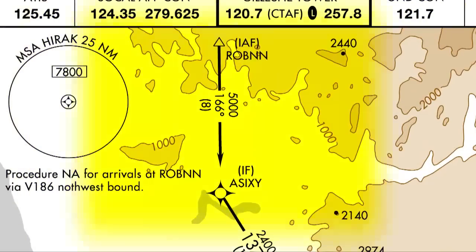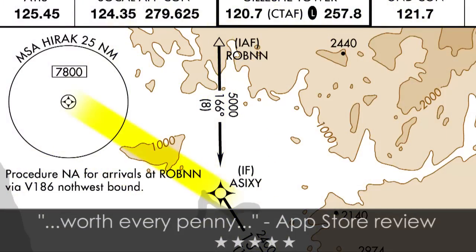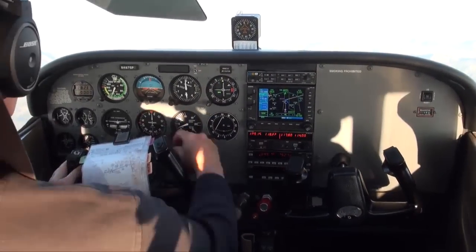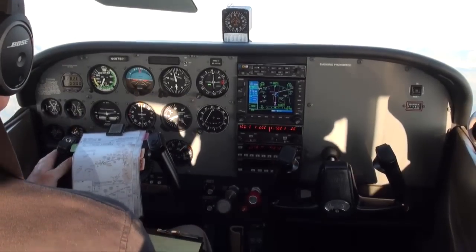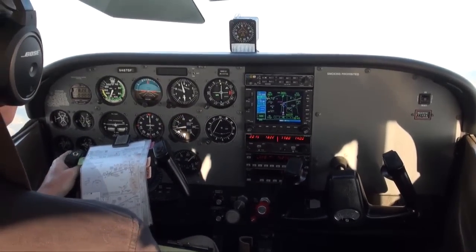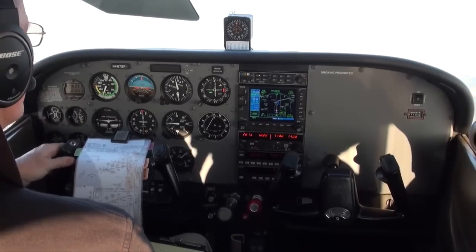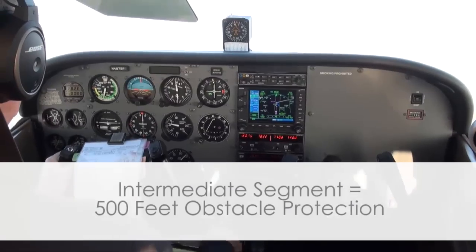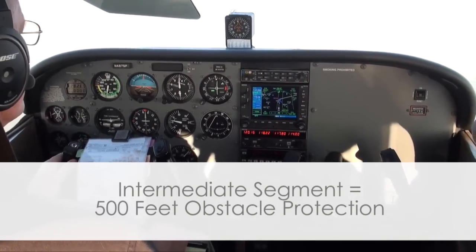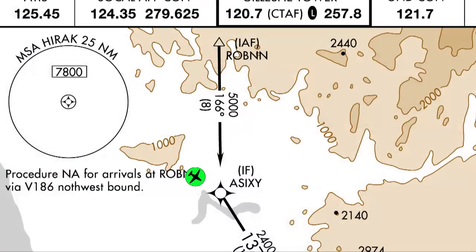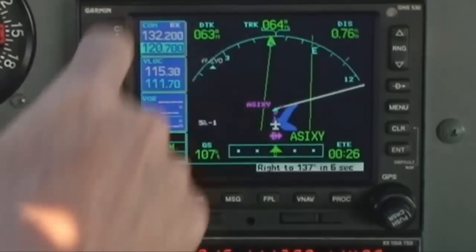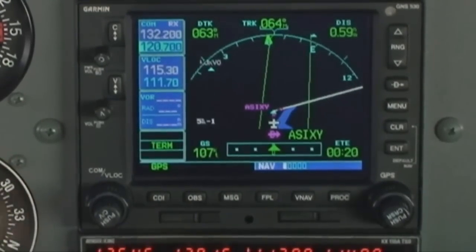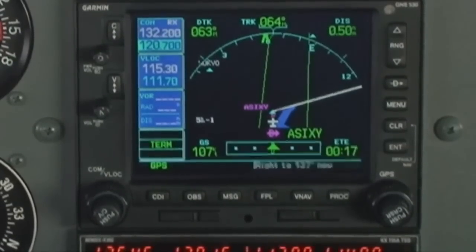We are not intercepting the leg from Robin to A60, but simply flying direct to A60 and beginning the approach from there. Later, we will discuss and show how to highlight and intercept a leg when this becomes necessary. From A60, the intermediate fix, to the final approach fix JUGL, we are on the intermediate segment of the approach, which provides only a minimum of 500 feet obstacle protection. As we approach A60, the GPS will count down from 10 seconds, then indicate turn now. It does this for all approaches.